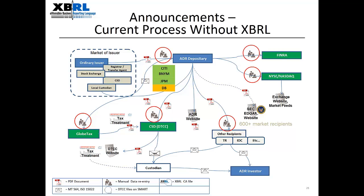At DTCC, on receipt of the email, operators manually re-key the information into the DTC system, which is then sent to the DTC participant terminal system and reported in end-of-day files to clients. Risks in this process include key data being overlooked, keystroke errors, input delays, and the email itself could be misdirected. XBRL presents a lot of opportunity to improve what is now a fully manual process.